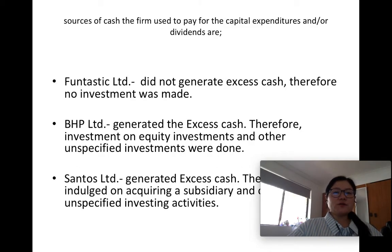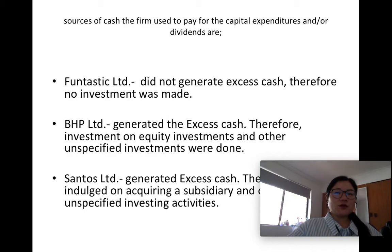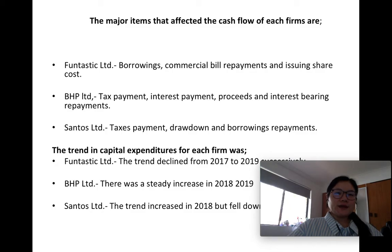Regarding sources of cash used to pay for capital expenditures and dividends: Fantastic Limited did not generate excess cash, therefore no investment was made. BPH Limited generated excess cash, therefore investments in equity and other unspecified investments were made. Santos Limited generated excess cash and indulged in acquiring a subsidiary and other unspecified activities. The major items that affected cash flow for each firm were: Fantastic Limited — borrowings, commercial bill repayments, and issuing share costs; BPH Limited — tax payments, interest payment proceeds, and interest-bearing repayments; Santos Limited — tax payments, drawdowns, and borrowing repayments.